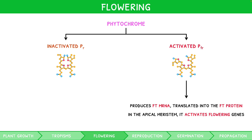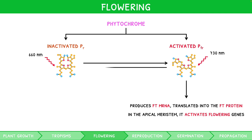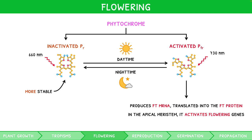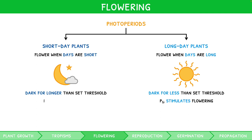You need to outline this balance in detail. Inactivated PR absorbs light of 660 nanometers to become activated PFR. Activated PFR absorbs light of 730 nanometers to become inactivated PR. Since sunlight contains more light of 660 nanometers, daylight hours accumulate PFR. However, since PR is more stable than PFR, nighttime hours reduce levels of PFR. PFR stimulates flowering in long day plants but inhibits flowering in short day plants. This means that during long days and short nights, there will be plentiful PFR, so long day plants flower. During short days and long nights, there will be minimal PFR, so short day plants flower.